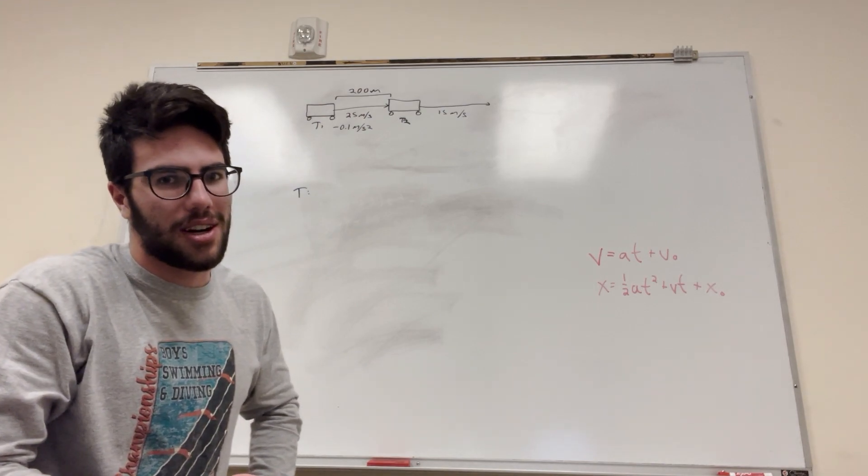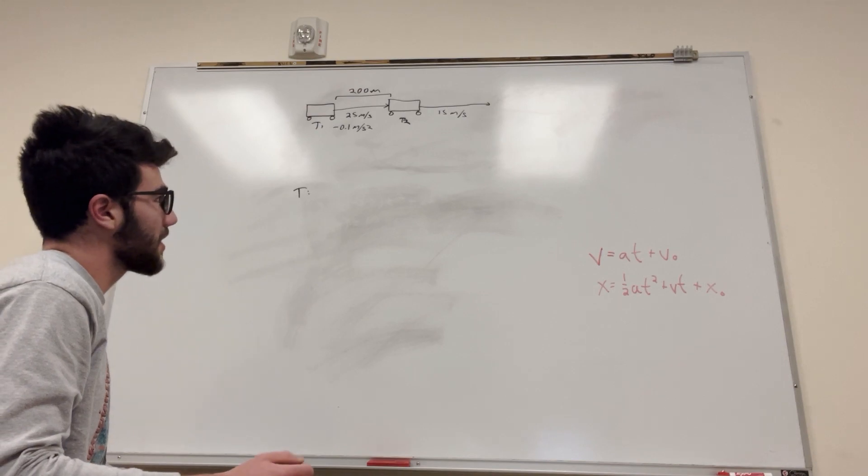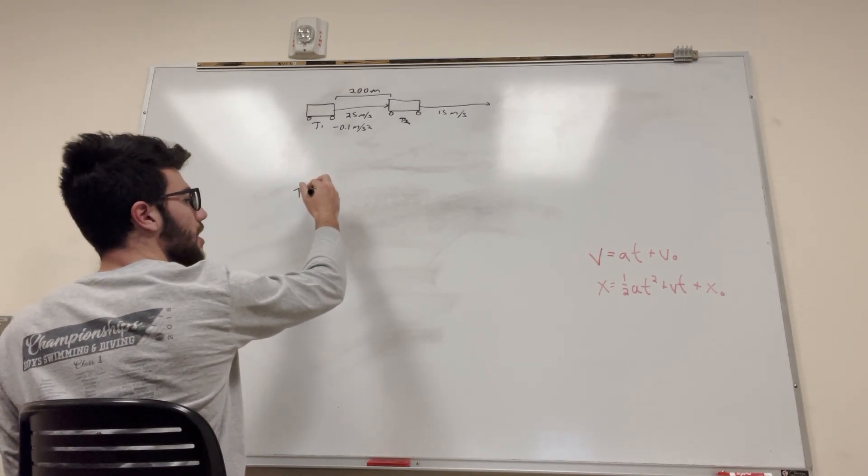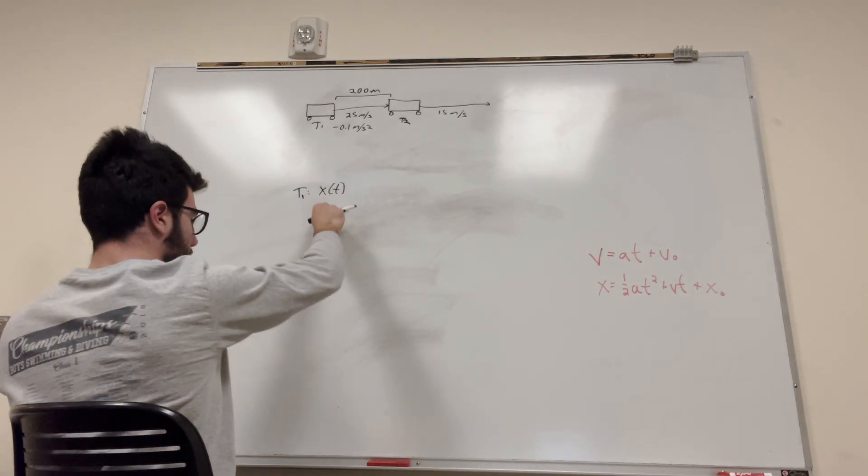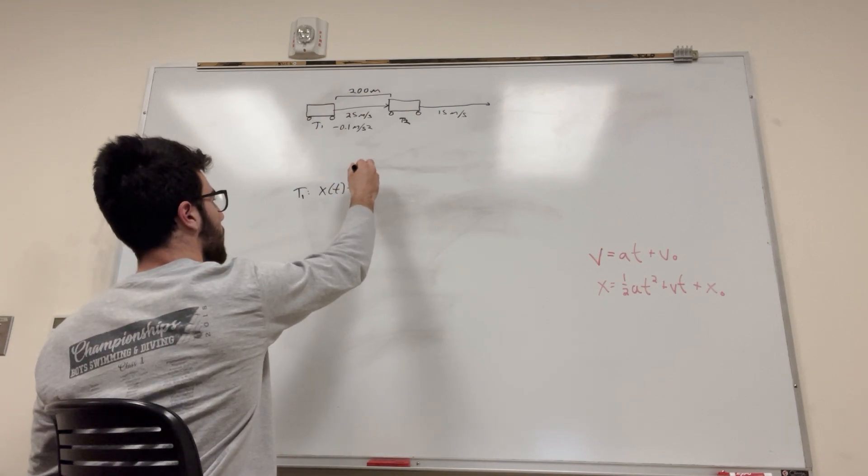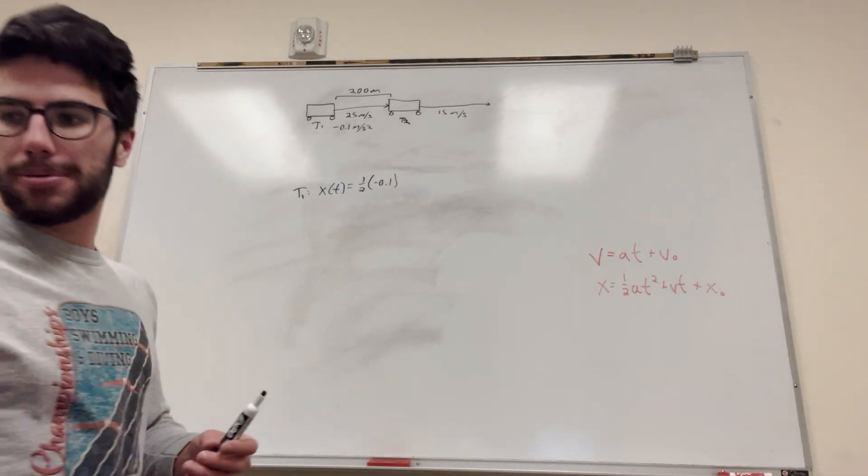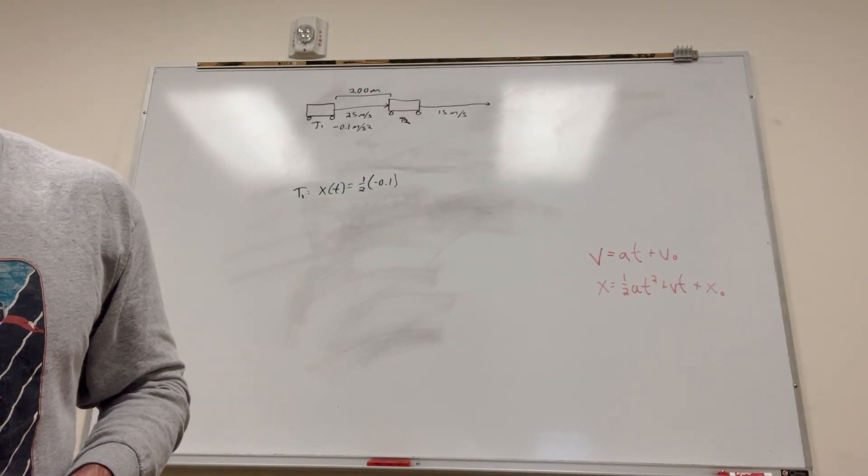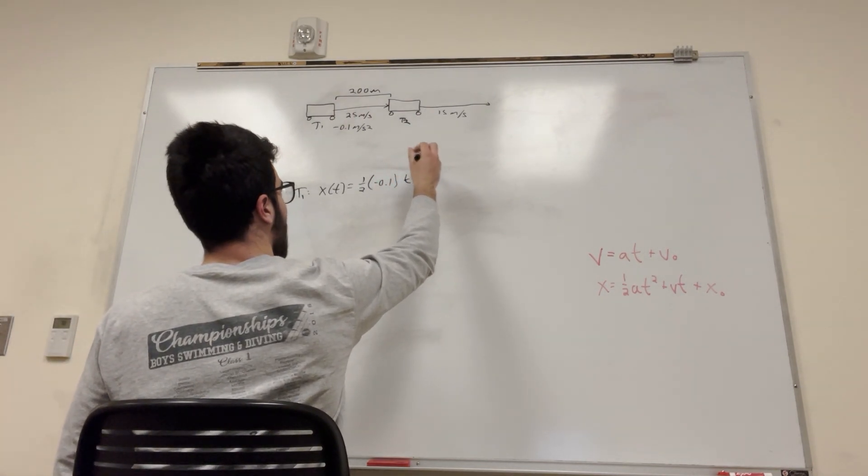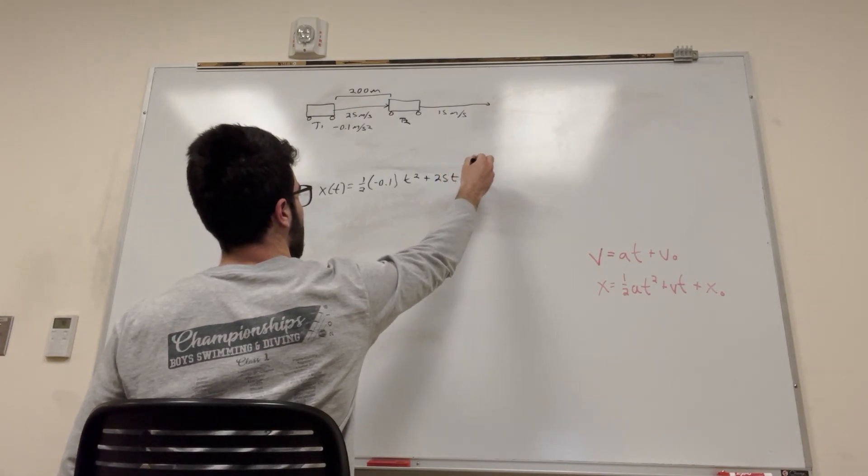So let's write this out. Train 1. So x of t, this just means what the x value is in accordance to t. That's equal to 1 half acceleration. So negative 0.1, I'm going to make sure that's the right number. Yeah, that's the right number. t squared. Plus velocity, 25, t. Plus initial value of x, which is 0. Alright.